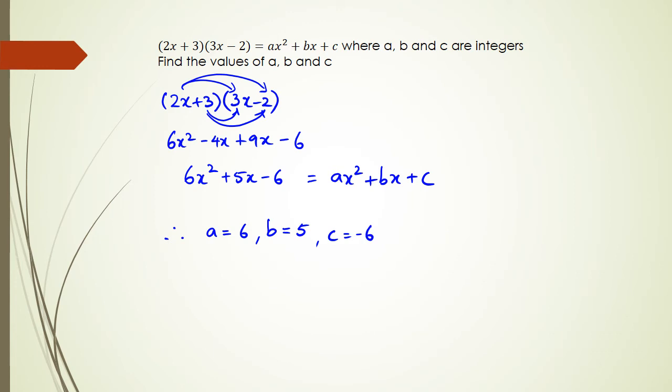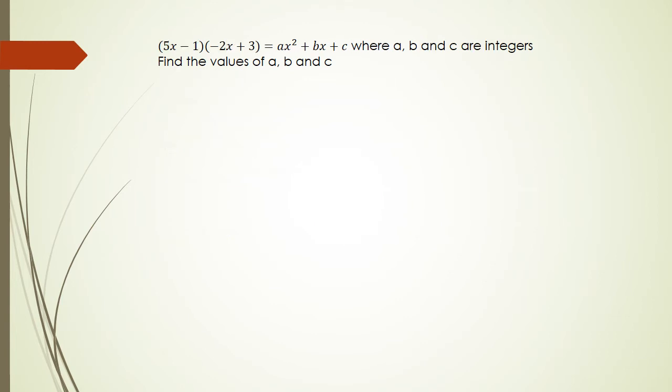All right, I'm going to be doing one more question, folks, similar style, just so you get the hang of it. So in this question, we've got 5x minus 1 multiplied by negative 2x plus 3, and we've got to write this as ax squared plus bx plus c.